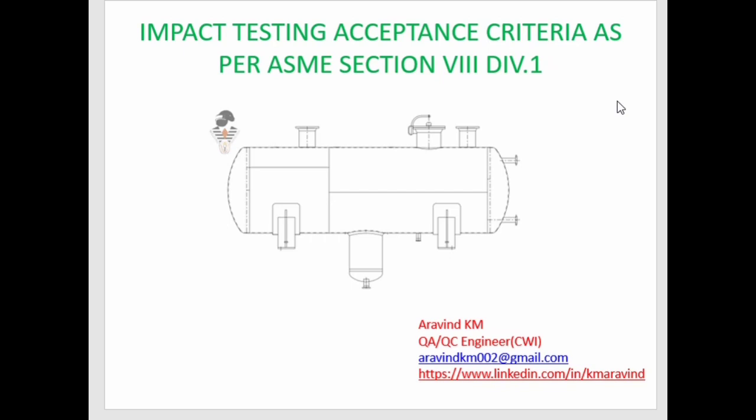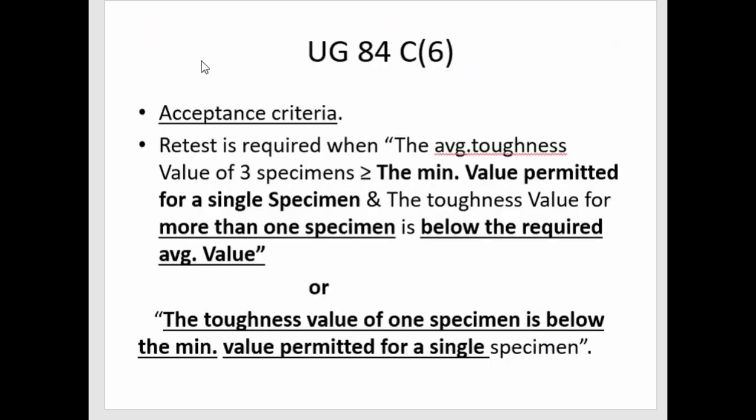Impact testing is required either for base metals or for procedure qualification. Impact testing for base metals is given in UCS 66, and for procedure qualification it is given in UCS 67 of ASME Section 8 Division 1. The acceptance criteria for impact testing is given in UG 84 C6 of ASME Section 8 Division 1.